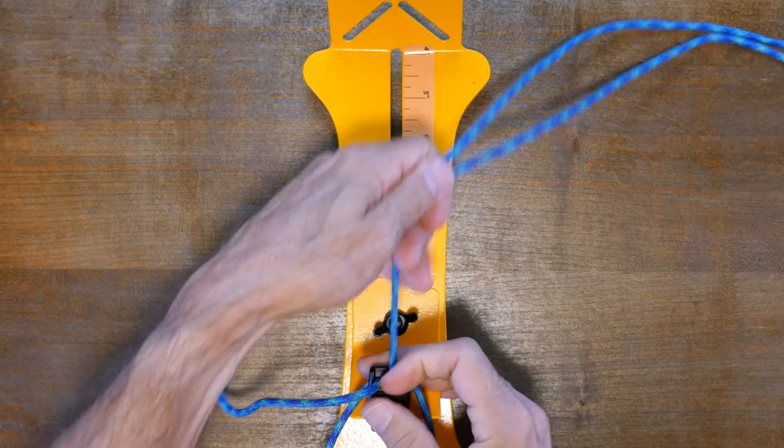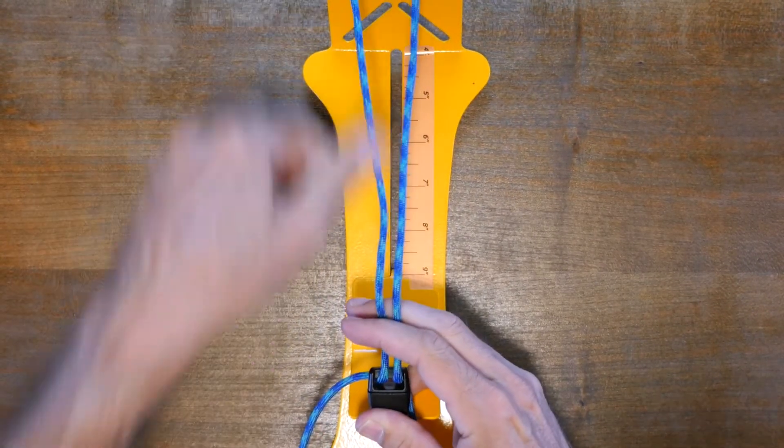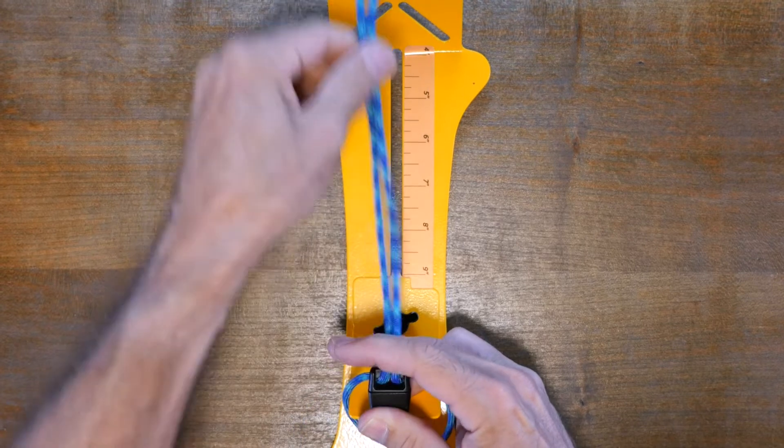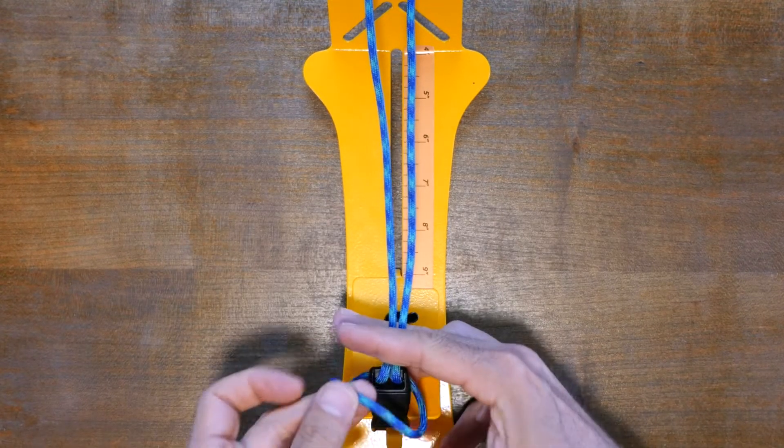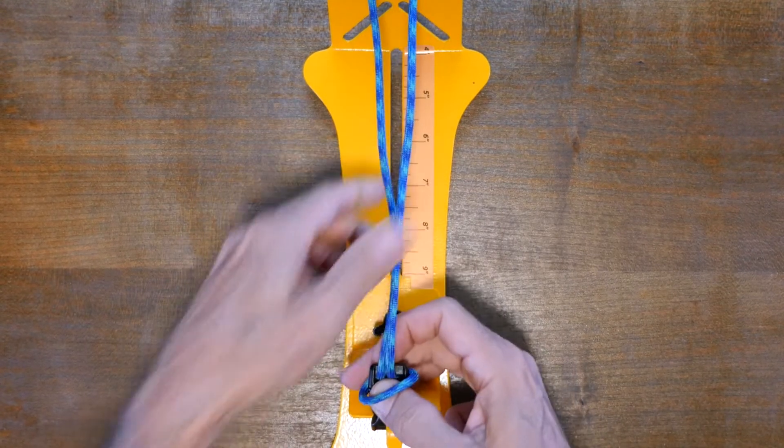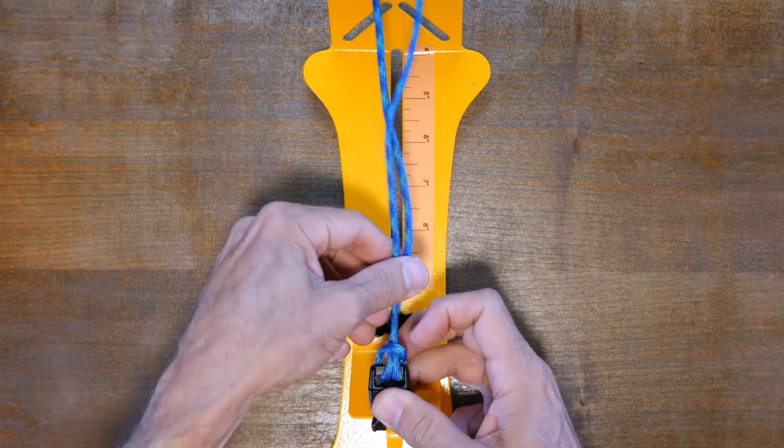Like most bracelets, I started with tying a girth hitch at both ends. I know most people call this a cow hitch. I call it a girth hitch and I have a video that shows the difference between a cow hitch and a girth hitch. Link in the description.